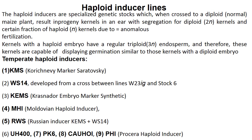There are two kinds of inducers: temperate inducers and tropical inducers. The major commonly used temperate inducers are: KMS, WS14, KEMS, MHI, RWH, UH400, PK6, CAU, HOI and PHI.